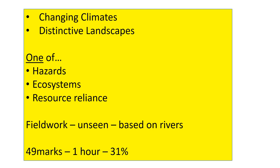Remember that you do have a section C. You haven't finished when you've done your choice of topic — you need to go on to section C, which will be the unseen fieldwork questions. We know that that's going to be based on rivers. The whole paper will be one hour, a short exam, and you will have 49 marks available to you.